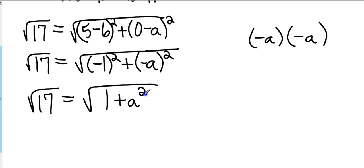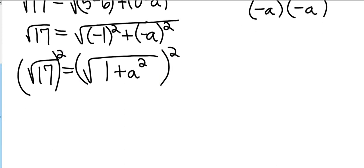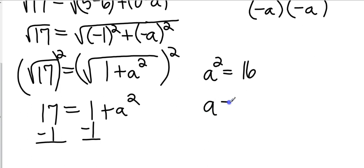Okay, now they both have square roots on them. So let's square both sides. This comes from Monday's work. And that gives us 17 equals 1 plus a squared. Subtract the 1. So I've got a squared equals 16. Now square root both sides, and a equals plus or minus 4.